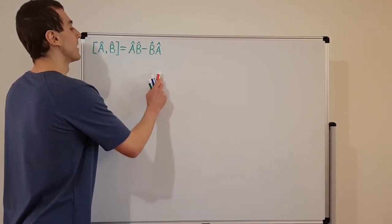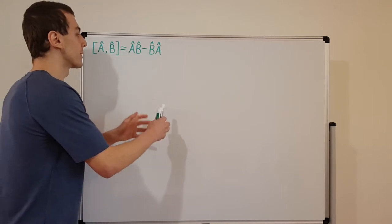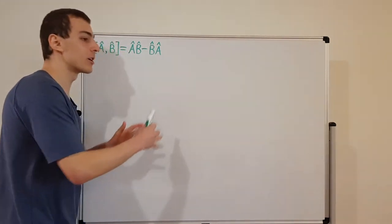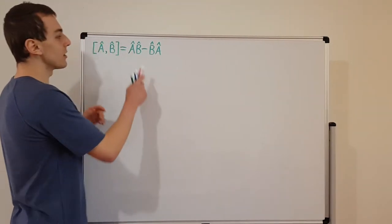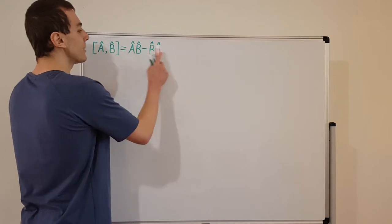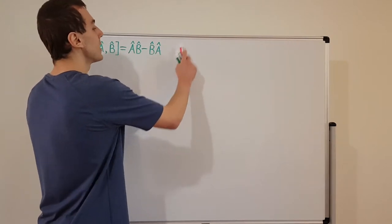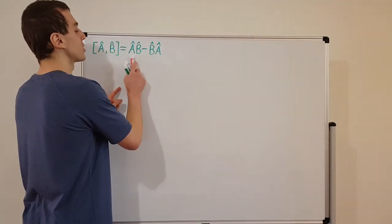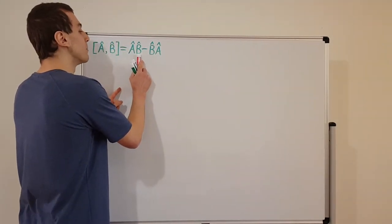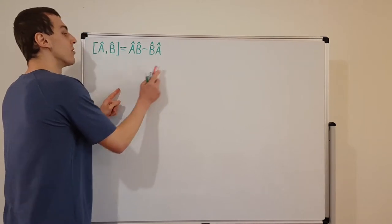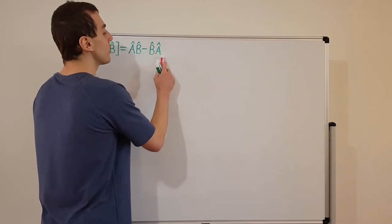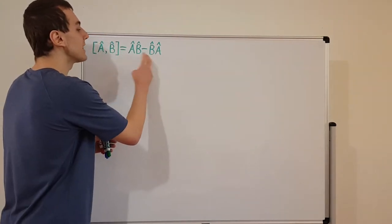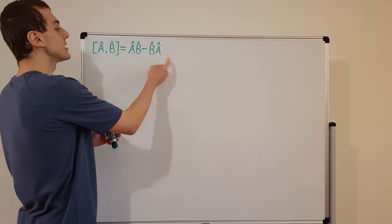What does this mean? Every time we have an operator in quantum mechanics, that operator has to act on something — it can act on a function or on a state. So these operators are all going to be acting on some dummy function. This part means we apply B first and then A, while this version means we apply A first and then B. So we swap the order in which we apply the operators, and then take the difference between them.